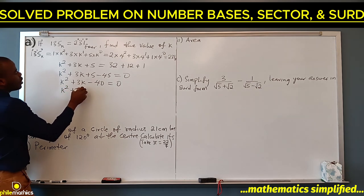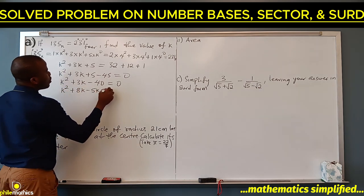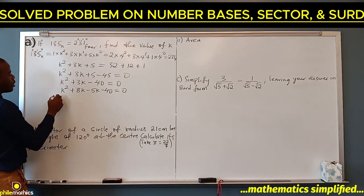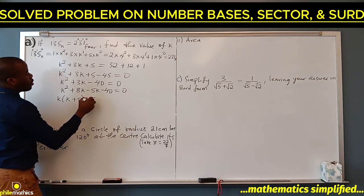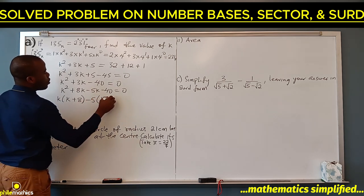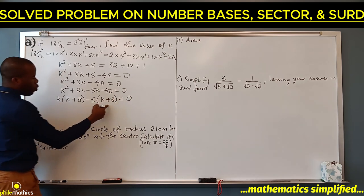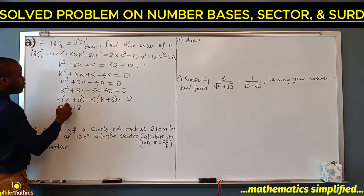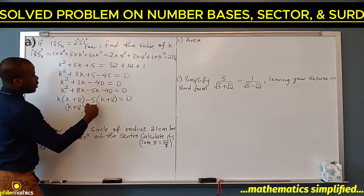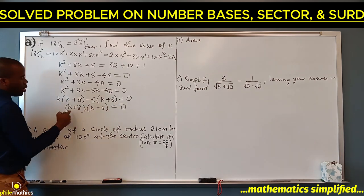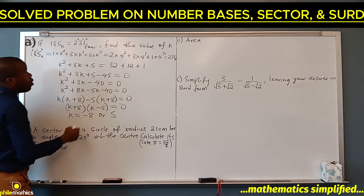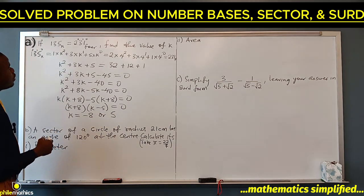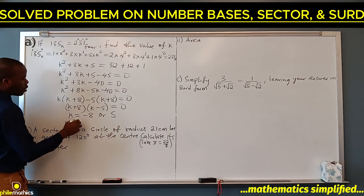In place of 3k we write 8k minus 5k minus 40 equals 0. Factorizing: k(k plus 8) minus 5(k plus 8) equals 0, giving (k minus 5)(k plus 8) equals 0. So k equals minus 8 or k equals 5. But k cannot be negative because we don't have a negative base. Therefore k equals 5.